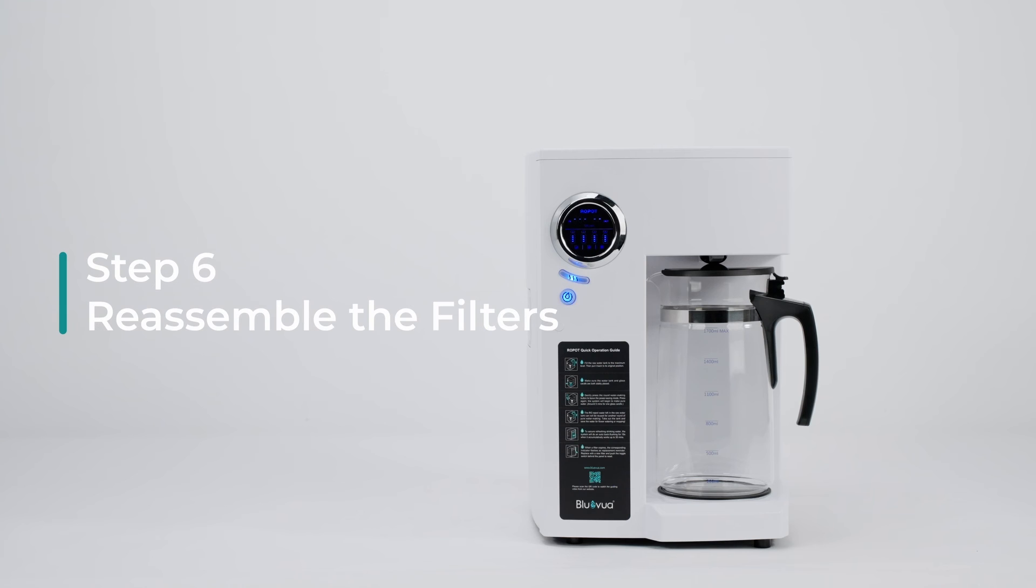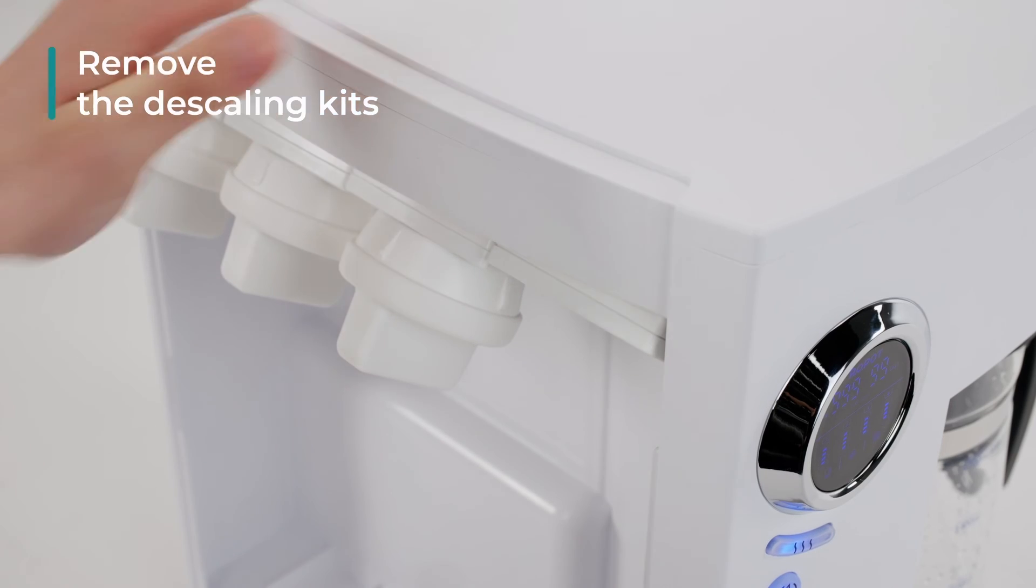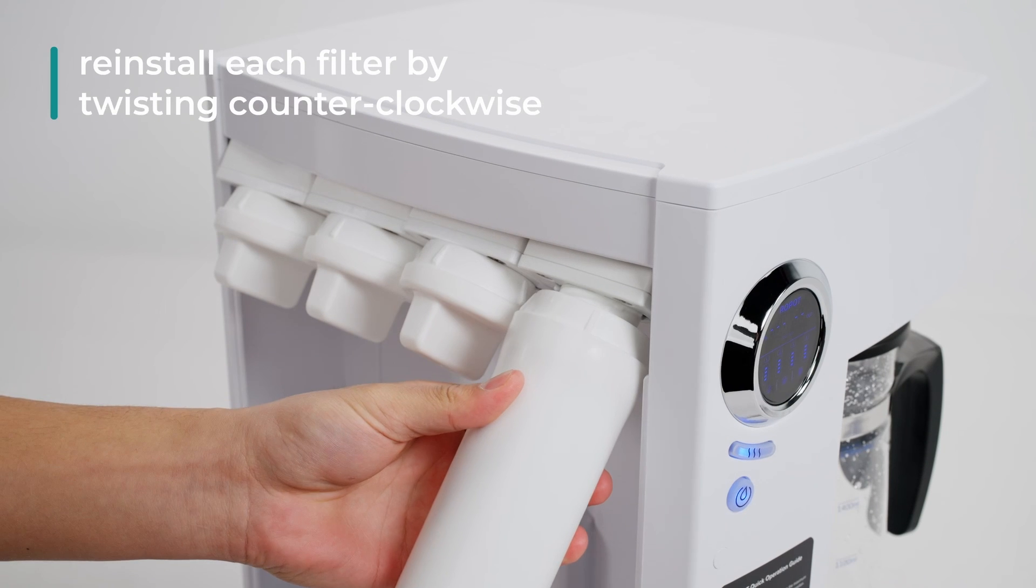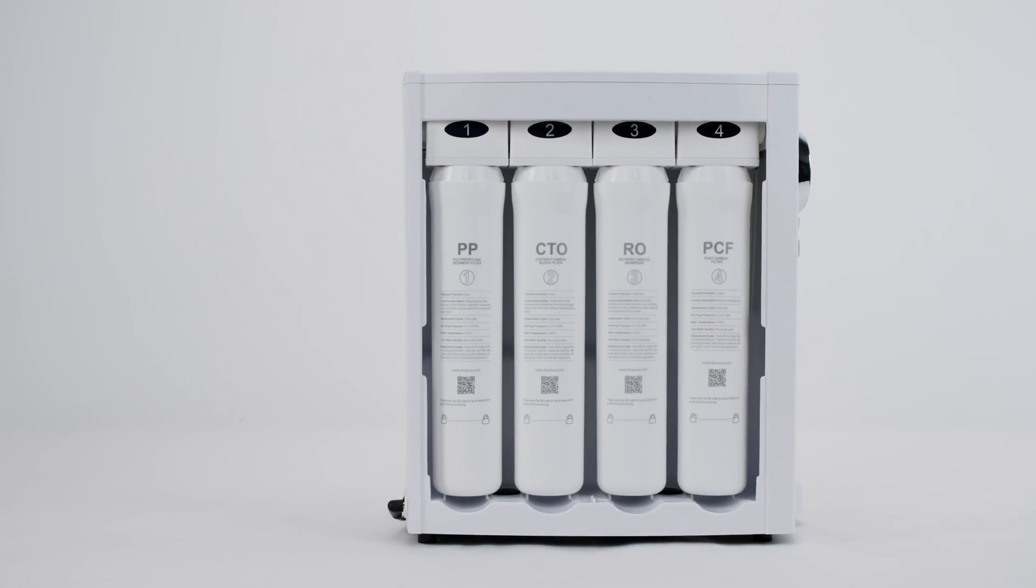Step six: Reassemble the filters. Remove the descaling kits by turning them clockwise and reinstall each filter by twisting counterclockwise until they click into place.